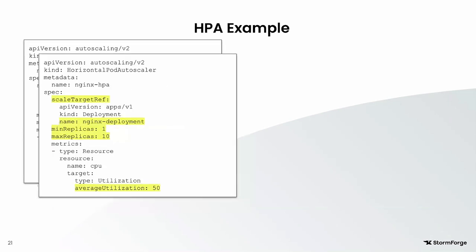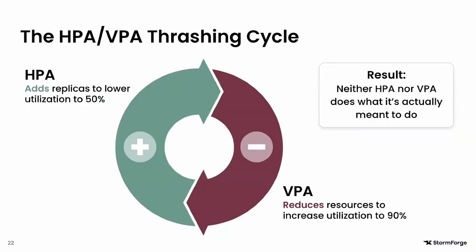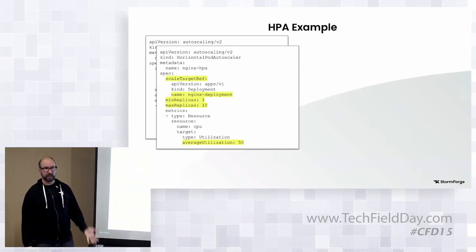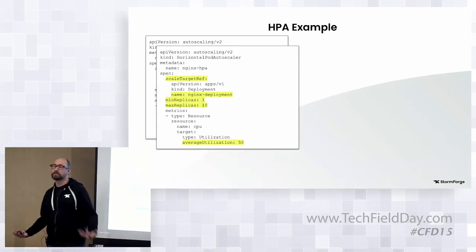With the HPA, how do they know that the number of replicas they need is as low as one, as high as ten? More importantly, how do you know at what CPU point you need to ramp up and have another copy take the work? Here's the kind of thrashing cycle — it goes all the way down to nothing or all the way up to infinity. I've only seen it go to nothing myself, but it really does happen in customer environments.